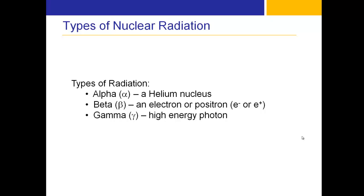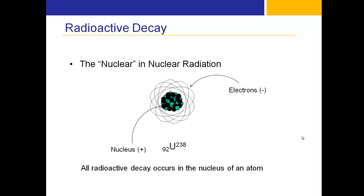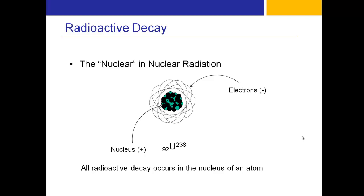Gamma radiation is actually identical to light — it's just higher in energy level on the electromagnetic spectrum. Radioactive decay occurs in the nucleus of an atom; that's the 'nuclear' in nuclear radiation. The nucleus consists of protons and neutrons, with electrons surrounding it in a cloud.